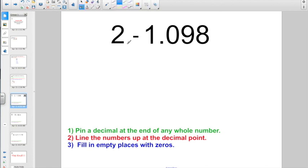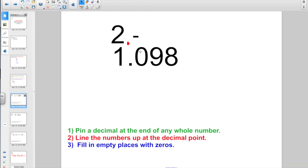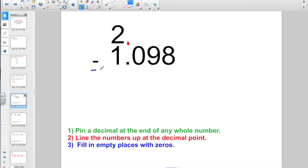This is the whole number two. I need a decimal point at the end of it. Let's go and have 1 and 98 thousandths lined up at the decimal point, nice, neat, and straight. Fill in your empty places with zeros. I'm going to put a zero there. I'm going to put a zero here. I'm going to put a zero here. The secret to success is lining them up at the decimal point.